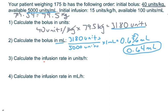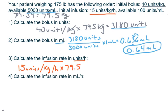For the infusion rate in units per hour, the initial infusion is 15 units per kilogram per hour. Multiply by his weight: 15 times 79.5 kilograms gives 1,192.5 units per hour. We do not round this — it's not a weight, syringe, BSA, or flow rate — so we leave it as is.